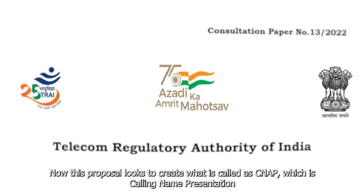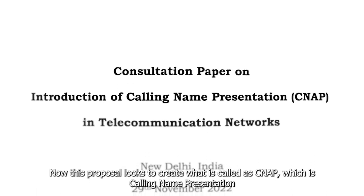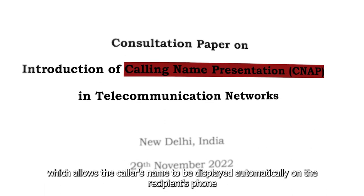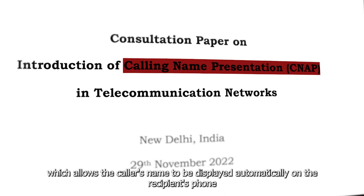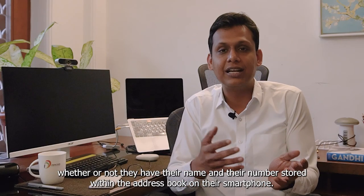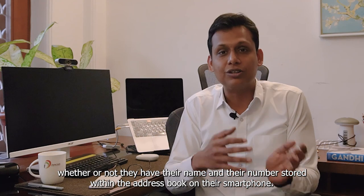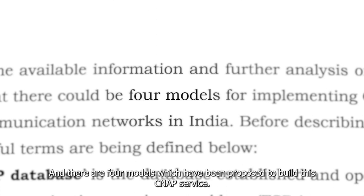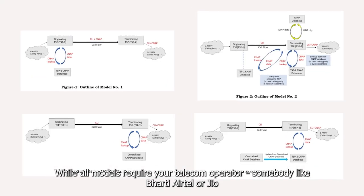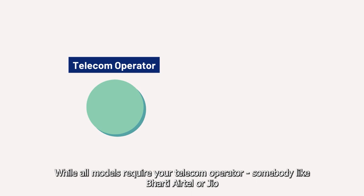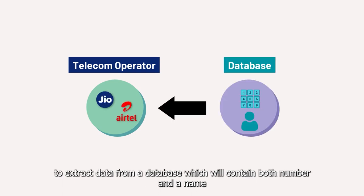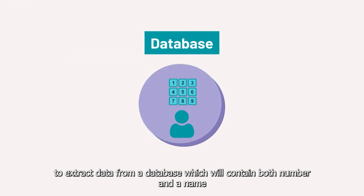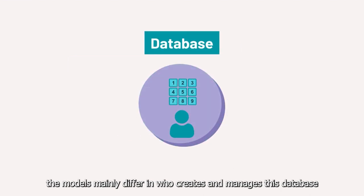This proposal looks to create what is called CNAP — Calling Name Presentation — which allows the caller's name to be displayed automatically on the recipient's phone whether or not they have the caller's name and number stored in their address book. There are four models proposed to build this CNAP service. While all models require your telecom operator — such as Bharti Airtel or Jio — to extract data from a database containing both a number and a name, the models mainly differ in who creates and manages this database and who has access to it.